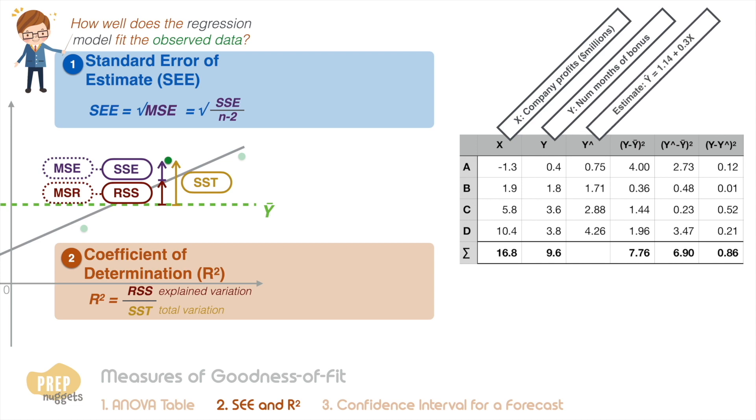and Y-hat is the estimated number of months of bonus based on the linear regression model we determined in the last lesson, calculate the standard error of estimate and the coefficient of determination of the model. Pause the video now and work out your answers.